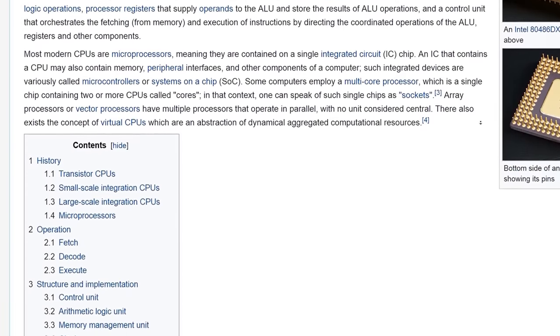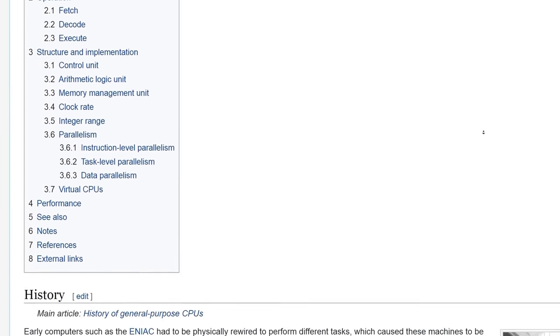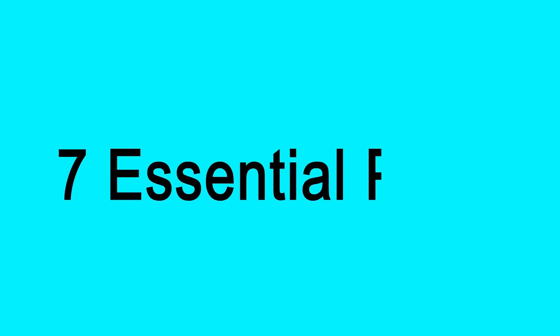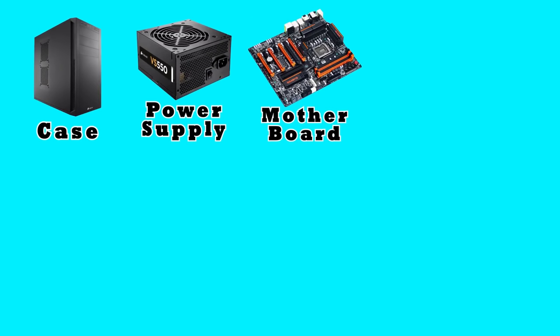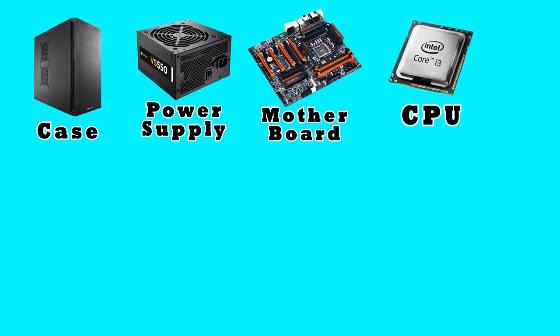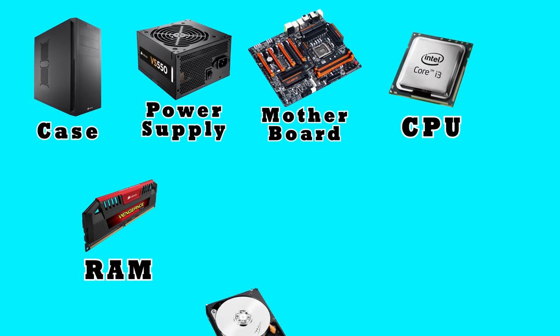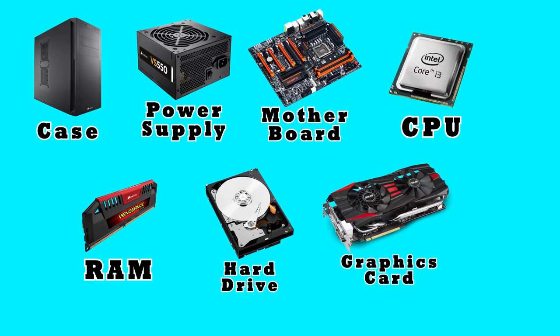While each one of these components is complex enough to spend a lifetime learning about, I'm going to give a very broad and general overview. A typical desktop computer comes down to these seven essential parts: case, power supply, motherboard, CPU, RAM, hard drive, and graphics card.